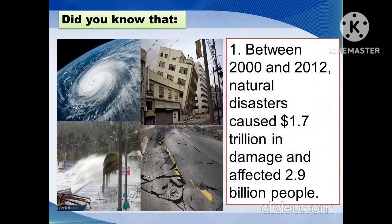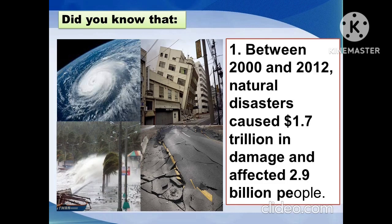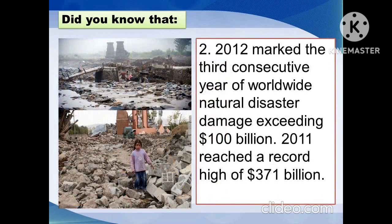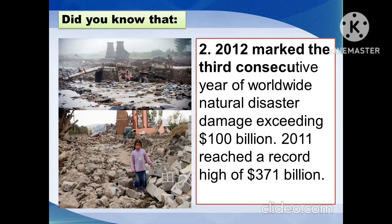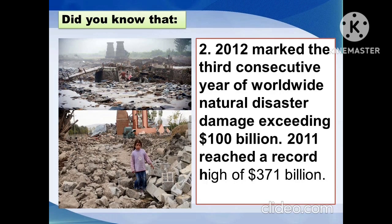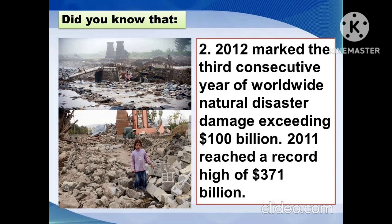Did you know that between 2000 and 2012, natural disasters cost $1.7 trillion in damage and affected 2.9 billion people? In 2012, it marked the third consecutive year of worldwide natural disaster damage exceeding $100 billion. In 2011, damage reached a record high of $371 billion.